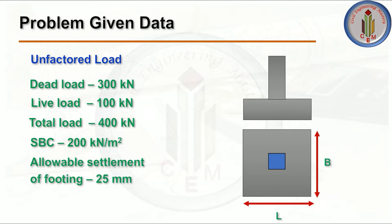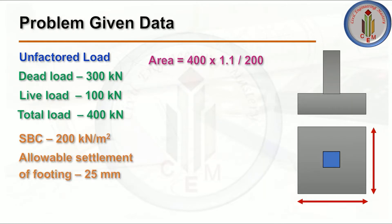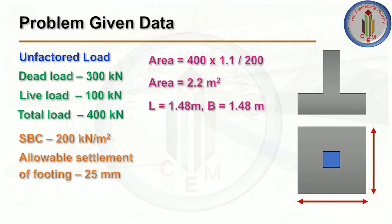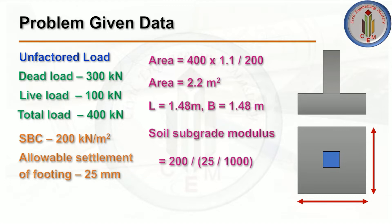Now let's find the area. Area = Load / SBC. Here, 10% additional load has been considered for earth filling, so: 400 × 1.1 / 200 = 2.2 m². From this we can find the length and breadth. Next, we need to find the subgrade modulus. Subgrade modulus = SBC / allowable settlement. Since the settlement is in millimeters, we convert to meters: 200 / (25/1000) = 8000 kN/m³.